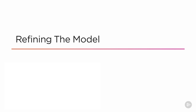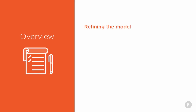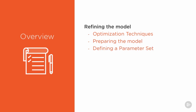Hi and welcome back for your final video tutorial on refining the model. Now that you're familiar with viewing the results from the previous module, we can begin the last part of this course where we will be refining the model by exploring the use of optimization in ANSYS. We will start by going over the different optimization techniques, preparing our model, defining the parameters and how to use the parameter workspace, and then we'll use direct optimization to help us refine the model. Finally we will conclude by going over what we've learned in the course and how it can help you in your future projects.